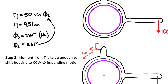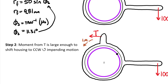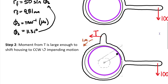We have approximately a 9.81 mm friction circle within the overall 50 mm radius. The line of action shifts parallel to the original line but tangent to the friction circle. Physically, that is the line along which the resultant force acts. The resultant friction force R_f is tangent to the friction circle radius r_f.